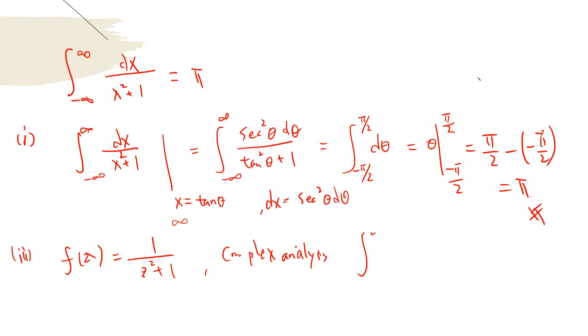The type 1 complex analysis tells me that this integral is 2πi times the residue on the upper half plane of f of z. There are two singularities: one is i and one is negative i. Since we only consider the upper half plane, we only care about z equals i.